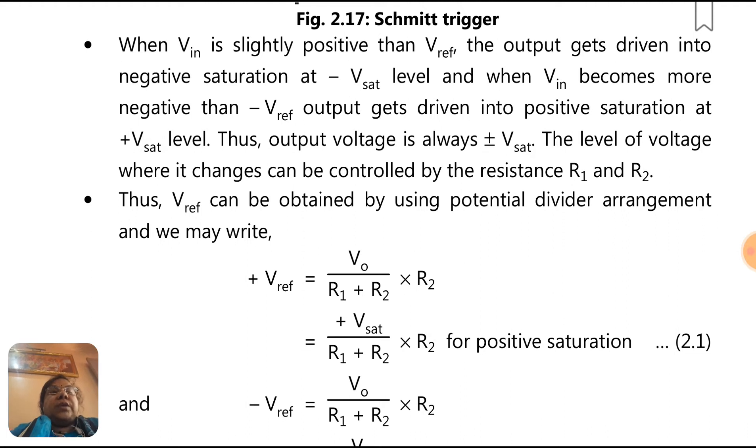Thus, output voltage is always plus or minus V_sat. The level of voltage where it changes can be controlled by the resistances R1 and R2. Thus, V_ref can be obtained by using potential divider arrangement and we may write: V_ref equals V0 upon R1 plus R2 times R2.